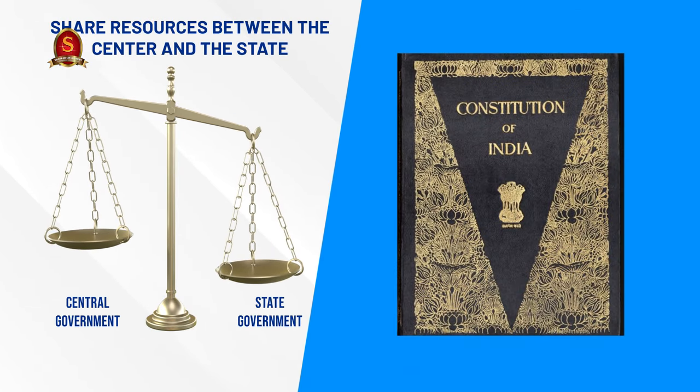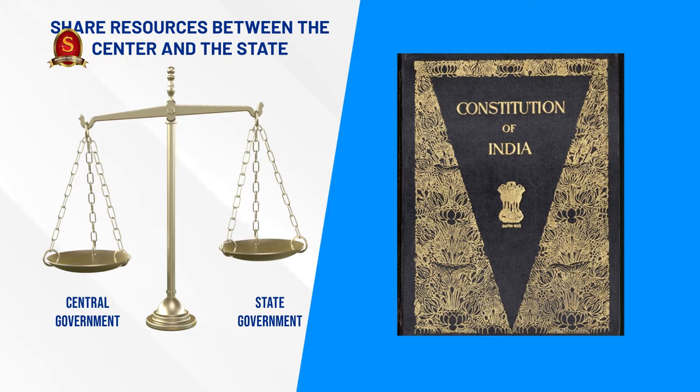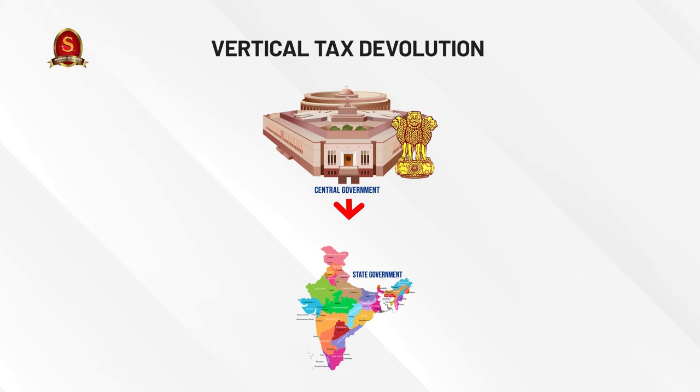Two key words to remember: the first is vertical tax devolution. The Finance Commission shares resources between the centre and the state through vertical tax devolution — meaning from the centre down to the states, from a higher level to a lower level. 41% of the resources are shared from the centre to the states through this mechanism.